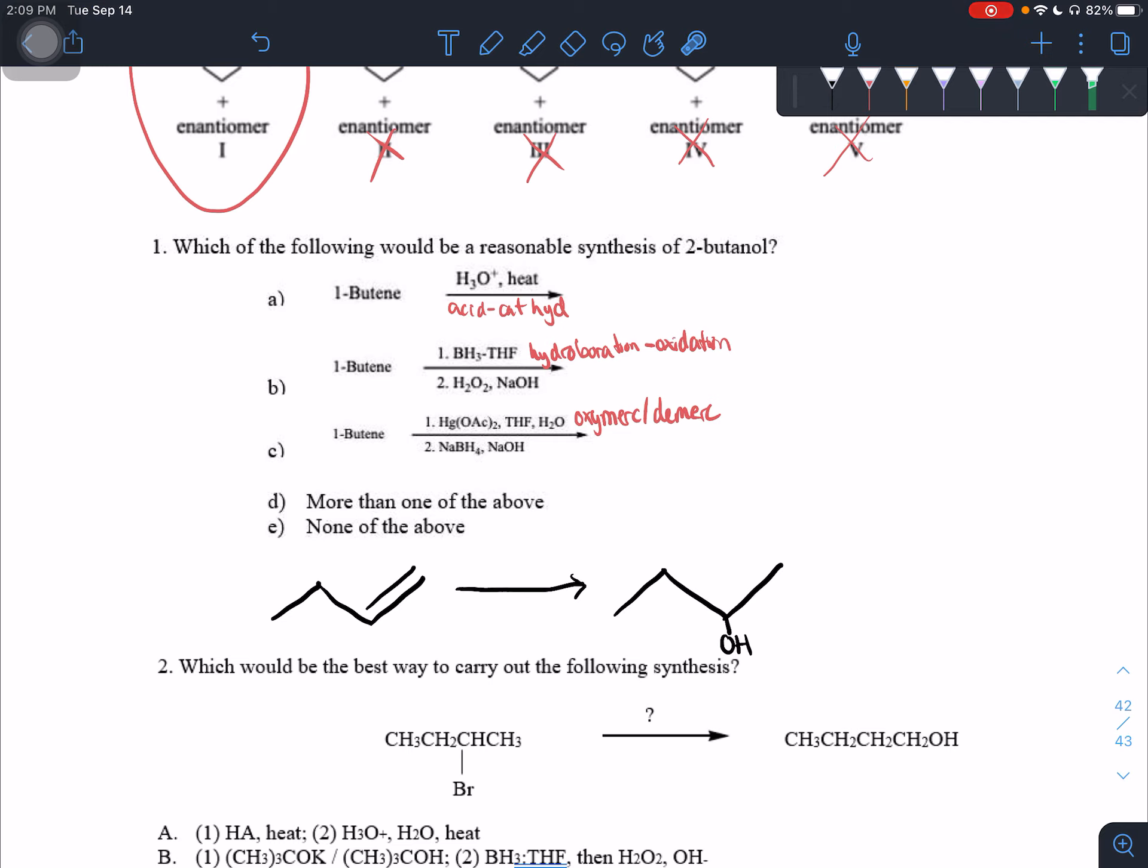So the only one of these that is anti-Markovnikov, meaning the alcohol will get added to the less substituted side is hydroboration oxidation. So B is not the answer choice here. Okay. So then the question comes up, which do both of these results in a synthesis of two butanol? And the answer to that is yes, right?